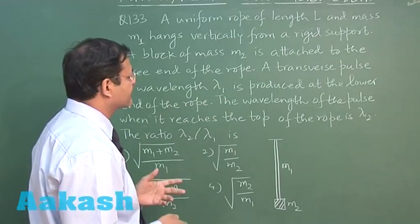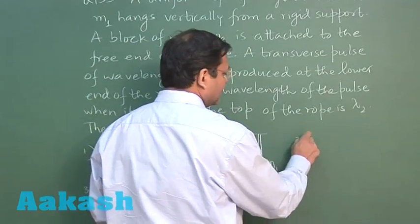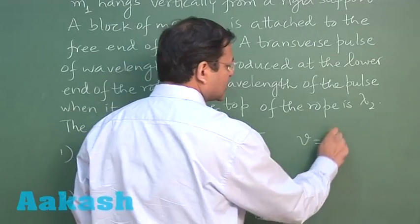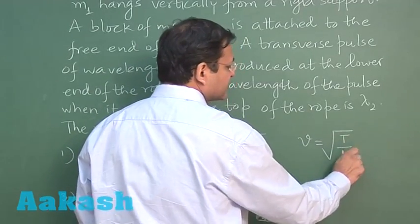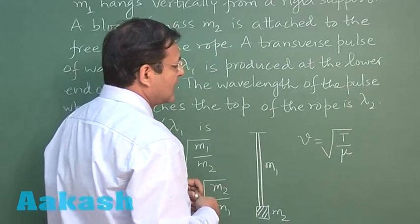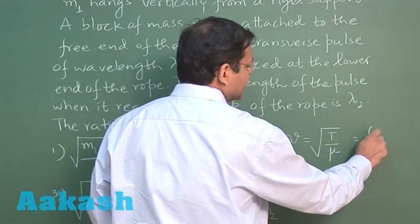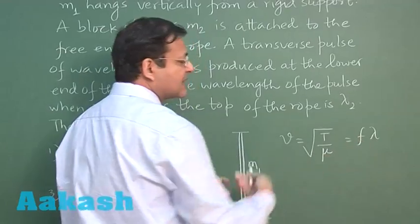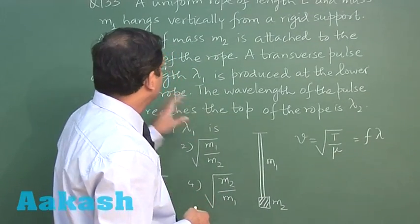For a transverse pulse, the wave velocity equation is v = √(T/μ), where μ is the mass per unit length, which is constant here. Since velocity equals frequency times wavelength, and frequency is constant, wavelength becomes directly proportional to the square root of tension.